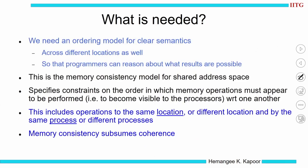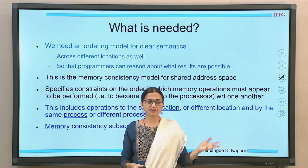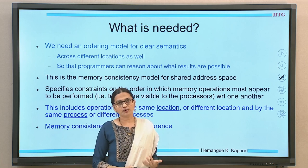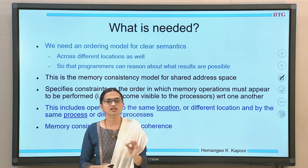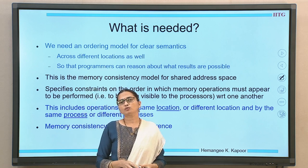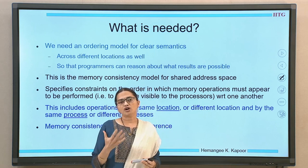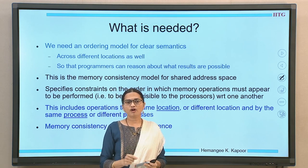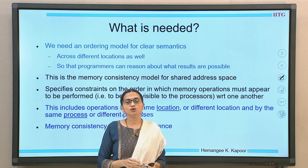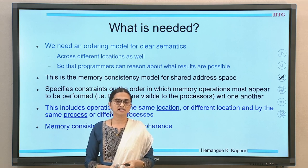What we actually need is clarity. In the previous example we were not sure what the output would be — there could be one, two, or three different outputs. When you write programs you want one deterministic final output that you can reason about confidently. Coherence alone was not able to tell us anything due to arbitrary interleaving. So to give clear semantics I need a formal ordering model, called the memory consistency model for the shared address space.